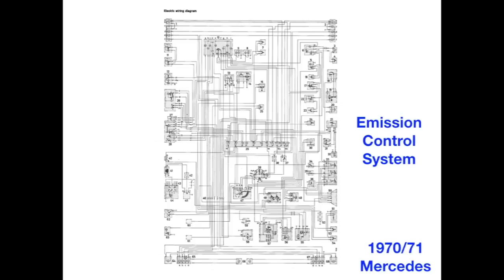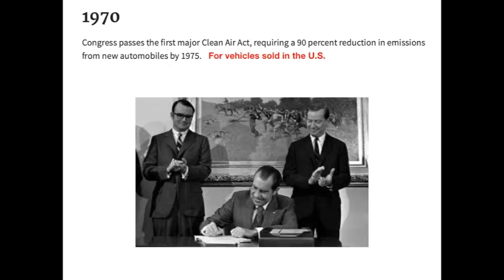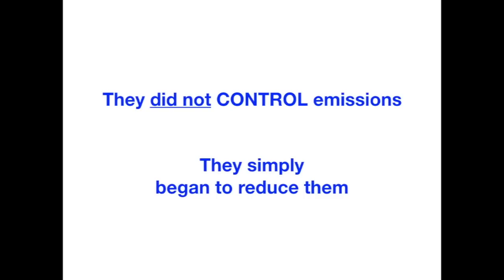In the emission control system, if it's in this diagram, and there's no control devices, how did they control emissions? Well, in 1970, Congress passed the first major Clean Air Act, and it was requiring a 90% reduction in emissions for new automobiles that were sold in the U.S. by 1975. They did not control emissions. They simply began to reduce them.